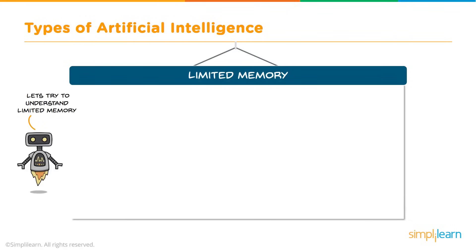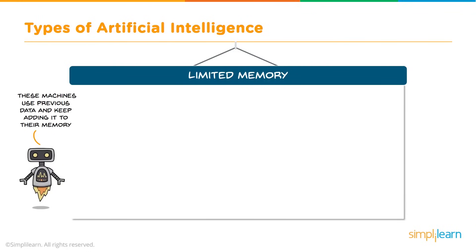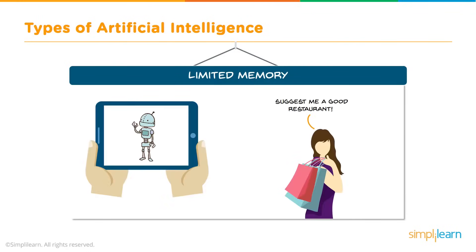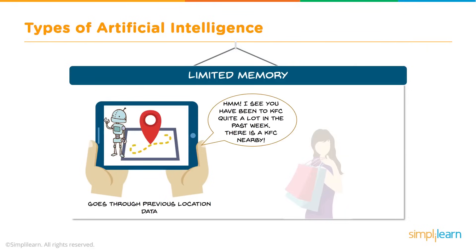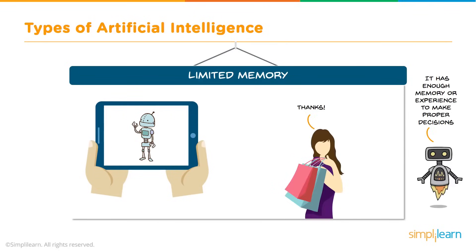Next, let's look at limited memory. These machines use previous data and keep adding it to their memory. For example: suggest me a good restaurant. Maybe we're looking to go out for dinner and we're not sure what we want to eat. 'I see you have been to KFC quite a lot in the past week — there is a KFC nearby.' So it goes through previous location data and says this is probably a good suggestion for tonight. It has enough memory or experience to make proper decisions, but the memory is very limited. It just takes what it has — where you've been, what you liked, your ratings — and from those suggests where you should go.